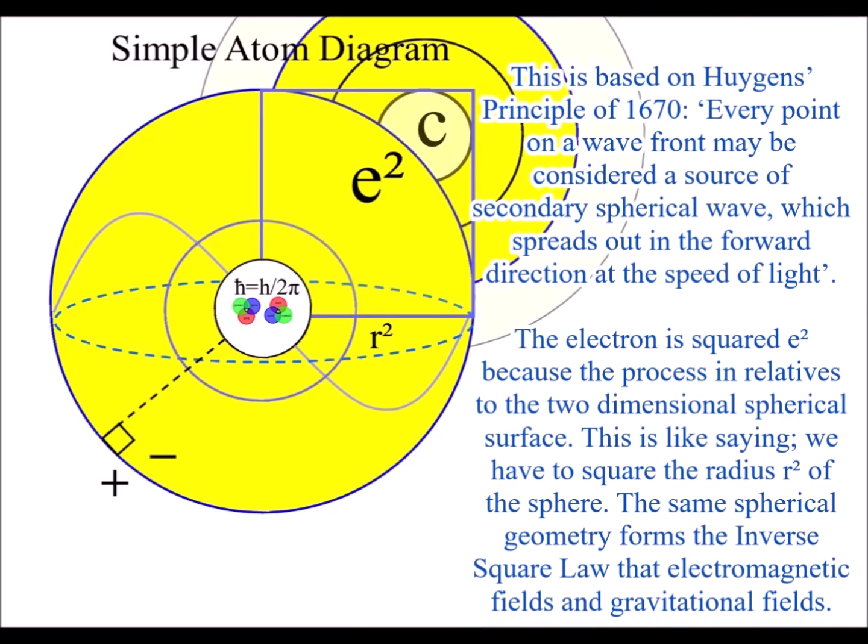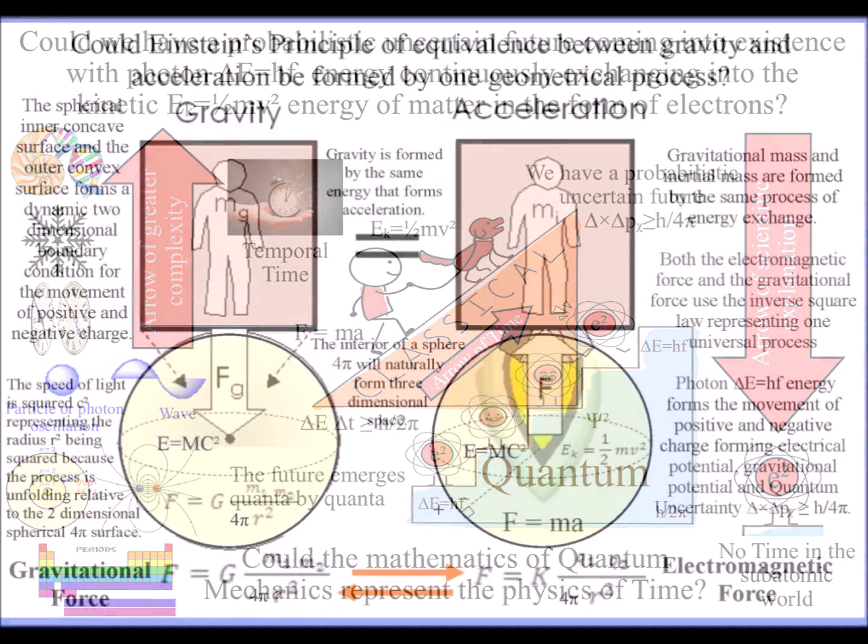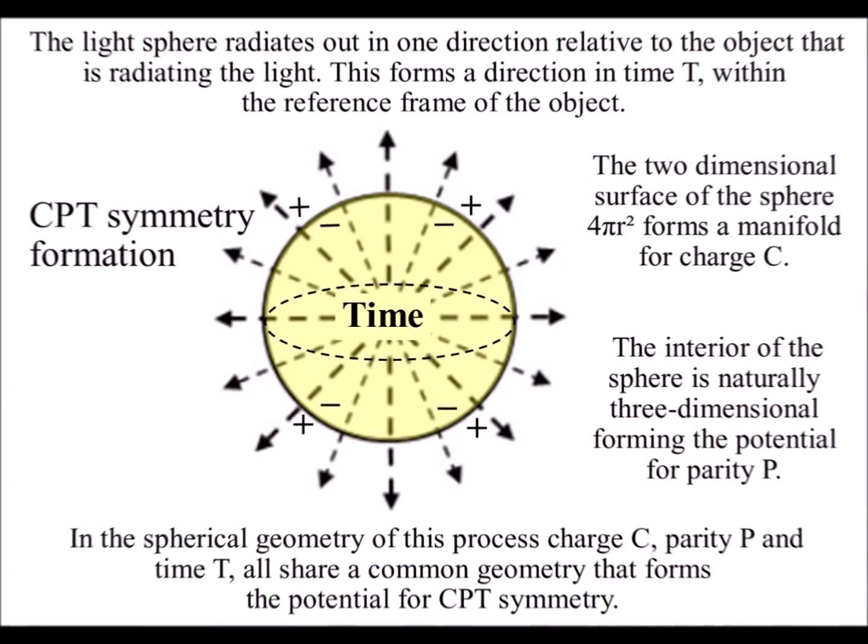In this theory, the mathematics of quantum mechanics represents the physics of time, with classical physics representing processes over a period of time, as in Newton's differential equations.